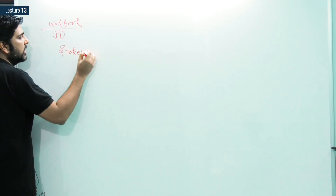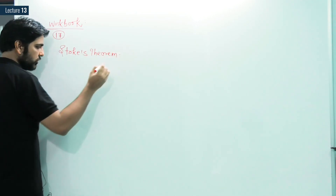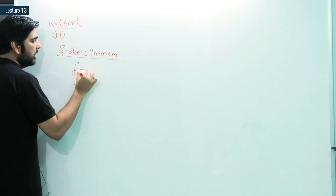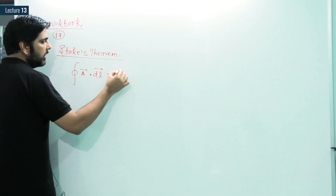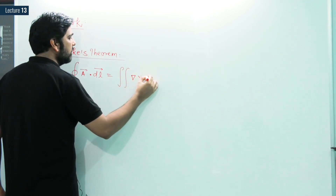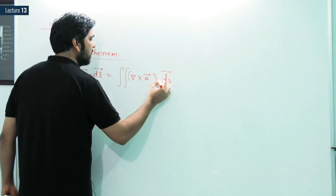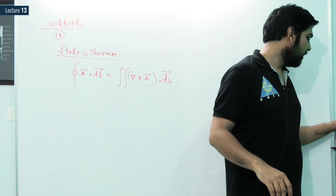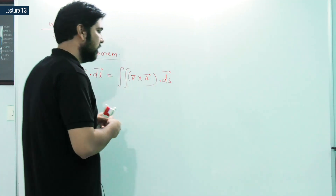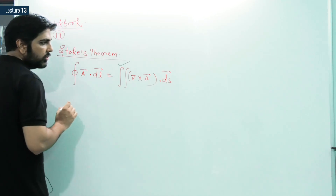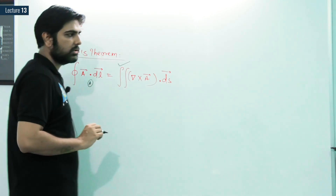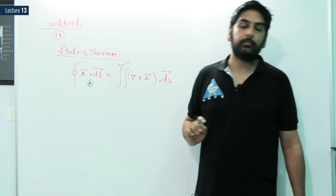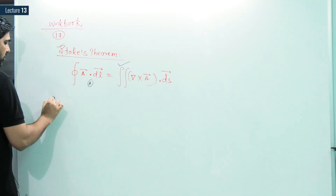What is the Stokes theorem? Stokes theorem states that for a closed curve, the line integral of a vector quantity is equal to the double integral of the curl of that vector quantity over the surface. For the formation of the surface we need a closed curve. So option A is the right answer for question 17, which was asked in GATE 2006.